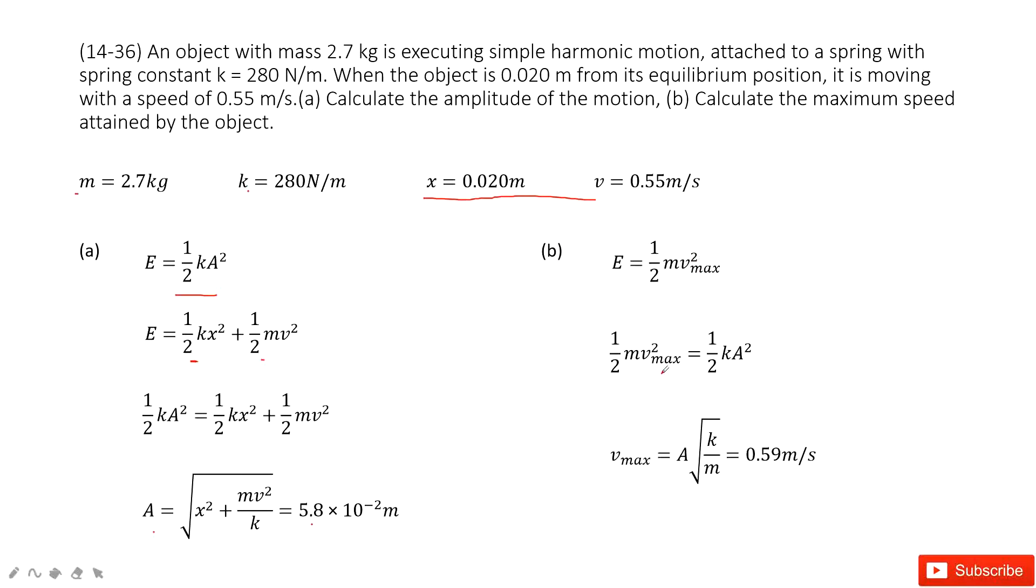And this one, the energy is conserved, so this energy should equal to this one, the total potential energy. Then we can get the function for maximum velocity, this one, and input the numerical quantities to get the answer there. Thank you.